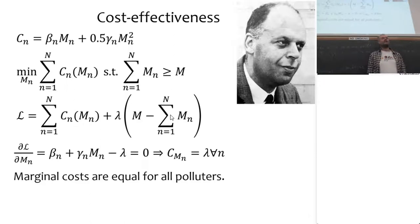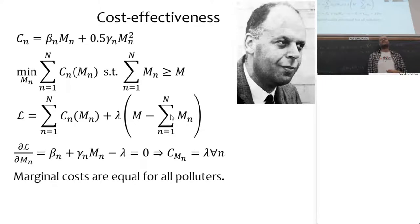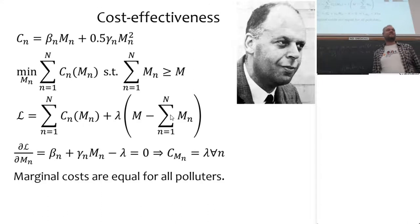There are two things wrong with 'more cost effective.' First, cost effectiveness is binary — you either are or you aren't. Second, if you have a perfectly good English word — 'cheaper' — you should use it. Saying 'this is more cost effective than that' signals you don't know what cost effective means and you're trying to impress by using more letters when you could just say 'this is cheaper.' There's also 'cost efficient,' which is either a mistranslation or refers specifically to the dual of cost effectiveness — avoid it unless you know exactly what you mean.